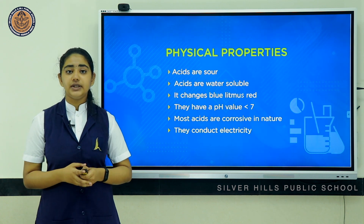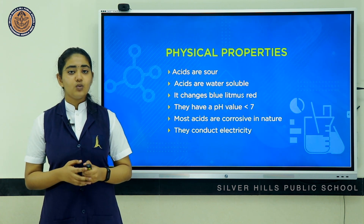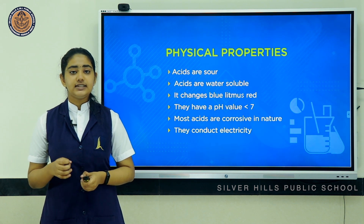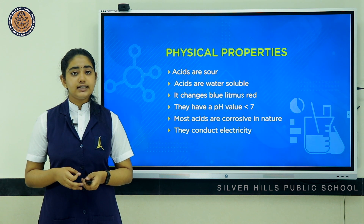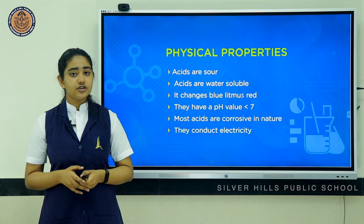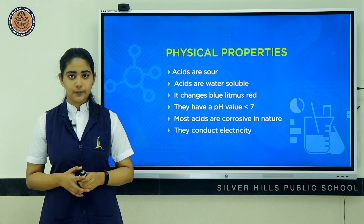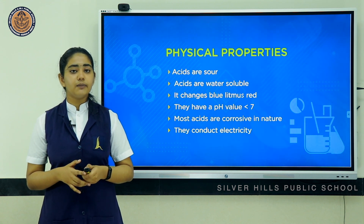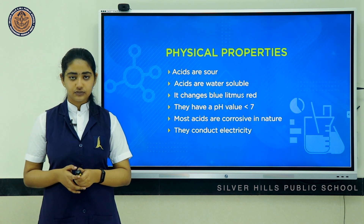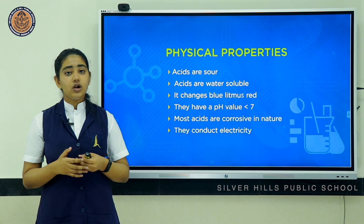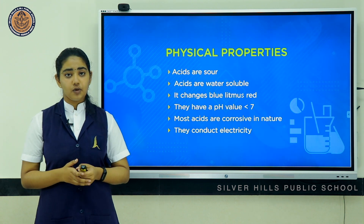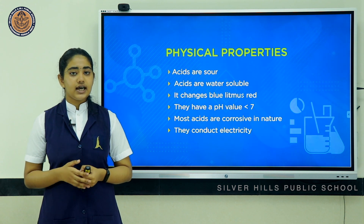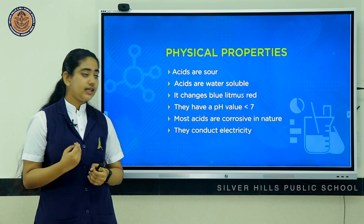Acids have a pH value less than 7. pH determines the hydronium ion concentration in a solution. Mathematically, it is the negative logarithm of hydrogen ion concentration of a solution. It derives its origin from the German word 'potenz of hydrogen'. So acids always have a pH value less than 7. The last two physical properties are: most acids are corrosive in nature, and they conduct electricity.